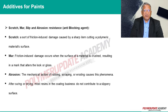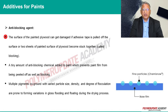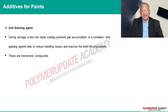Scratch, mar, slip, and abrasion resistance — anti-blocking agents: the surface of painted plywood can get damaged if adhesive tape is pulled off the surface, or two sheets of painted plywood become stuck together, which is called blocking. The addition of a small amount of anti-blocking agent to the paint prevents the paint film from being pulled off and also prevents blocking. Anti-gassing agents prevent gas build-up in a container in zinc-rich liquid coatings during storage, minimizing handling issues and extending shelf life. These are monomeric compounds.